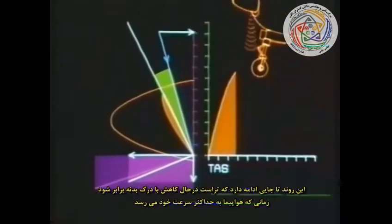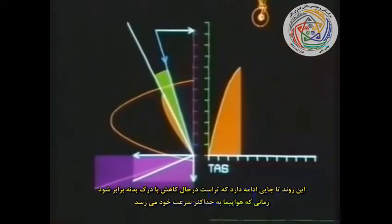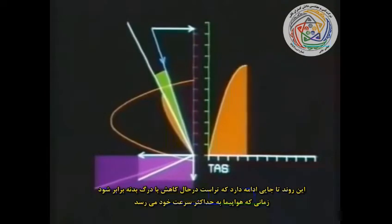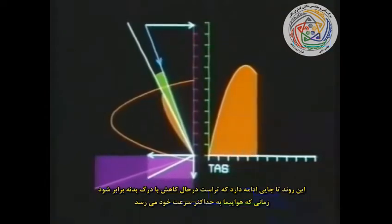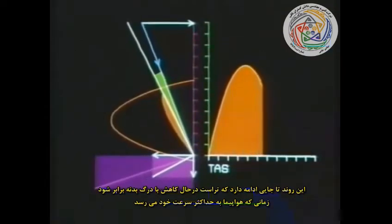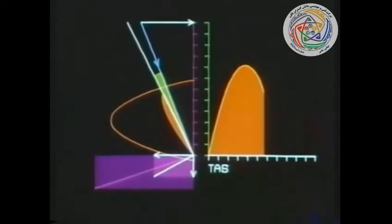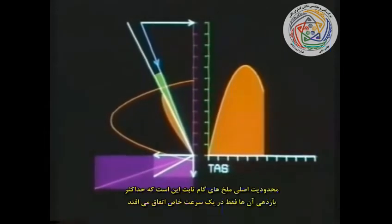This continues until the reducing thrust equals the increasing airframe drag, when the aircraft has reached its maximum speed. The principal limitation of fixed pitch propellers is that there is only one speed at which they work at peak efficiency.